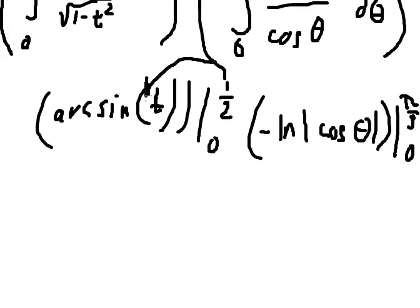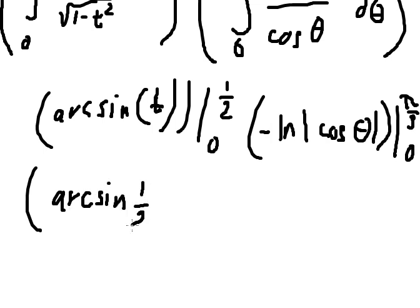So I will put 1 over 2 here and 0 here. So this one will put pi over 3 here and 0 here.